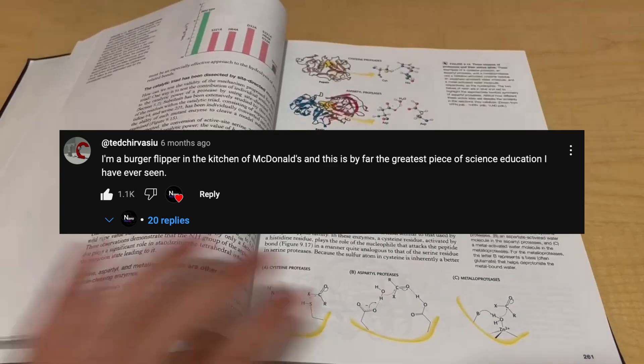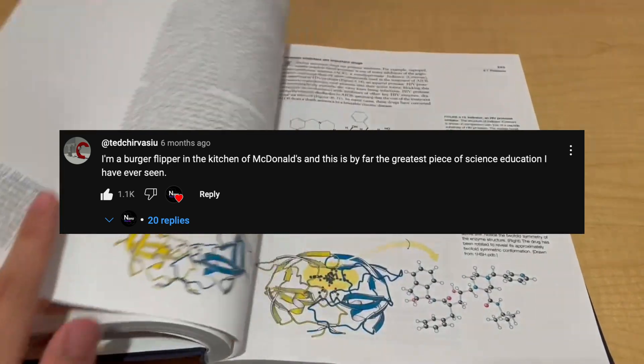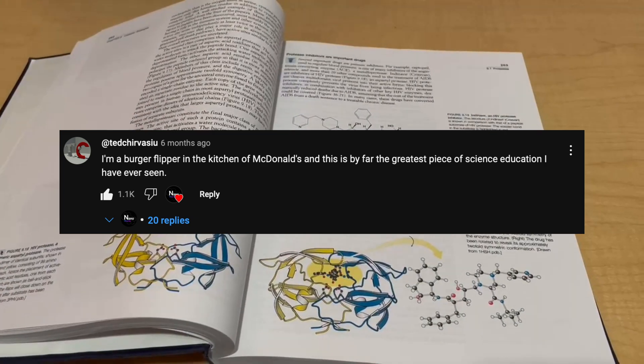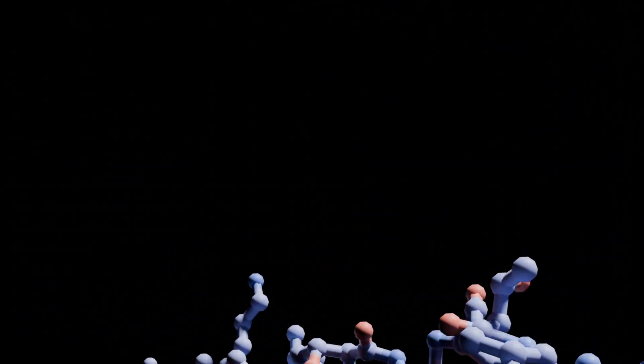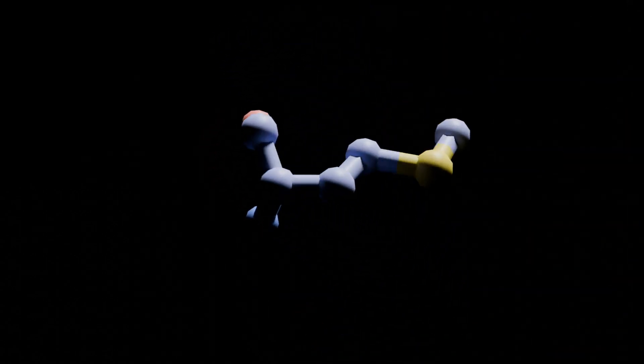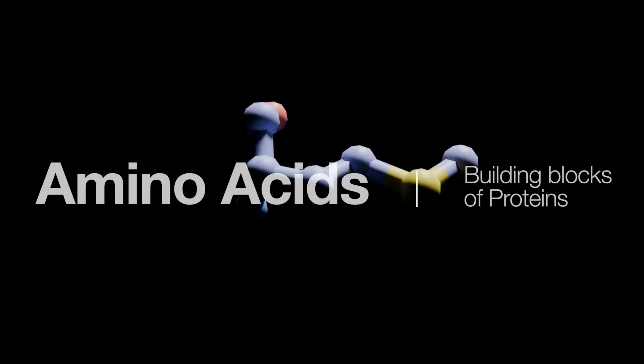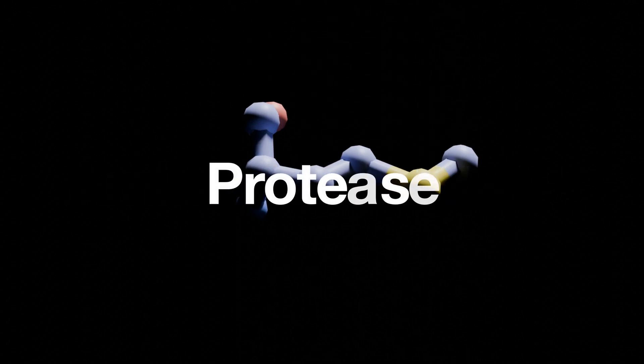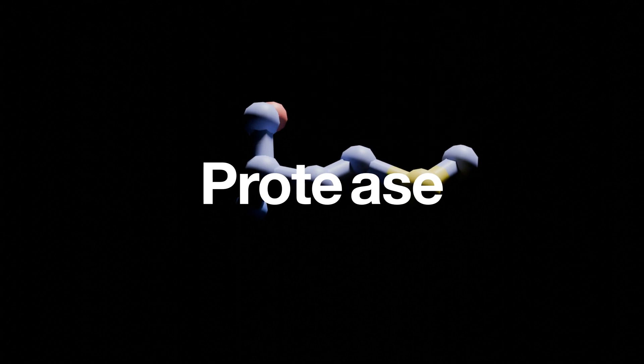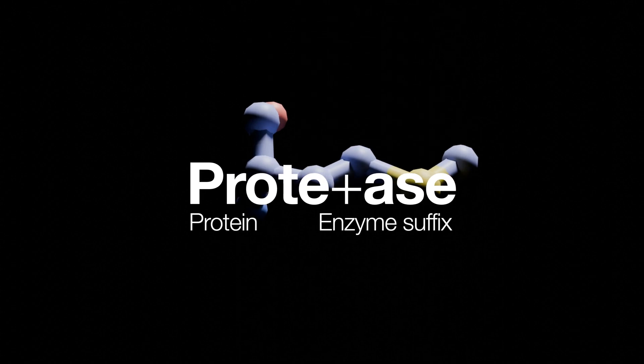Speaking of fast food, chymotrypsin actually plays a role in all of this. It's in your intestines, and it breaks down the proteins you eat into smaller bits, which get further broken down by its cousins into amino acids so they can be absorbed into your blood. These enzymes are known as proteases. The protei stands for protein, and ace is the suffix for enzyme names.